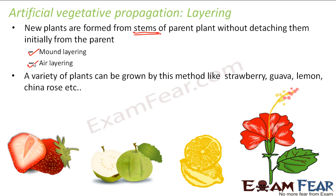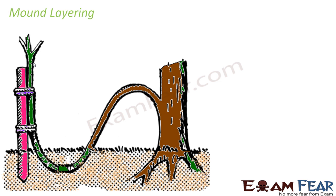These artificial vegetative propagation methods are extremely useful in day-to-day life, because when we want to increase the number of plants or increase production of fruits and vegetables, we grow more plants by these methods. In mound layering, we pull a branch of the parent plant towards the ground and then cover a part of it with moist soil.